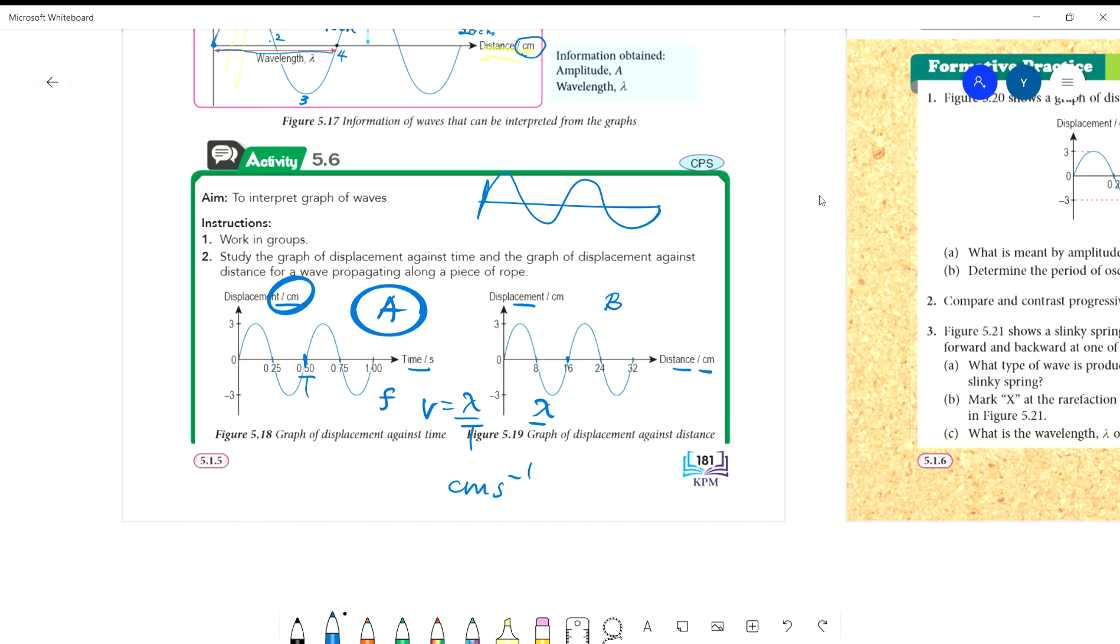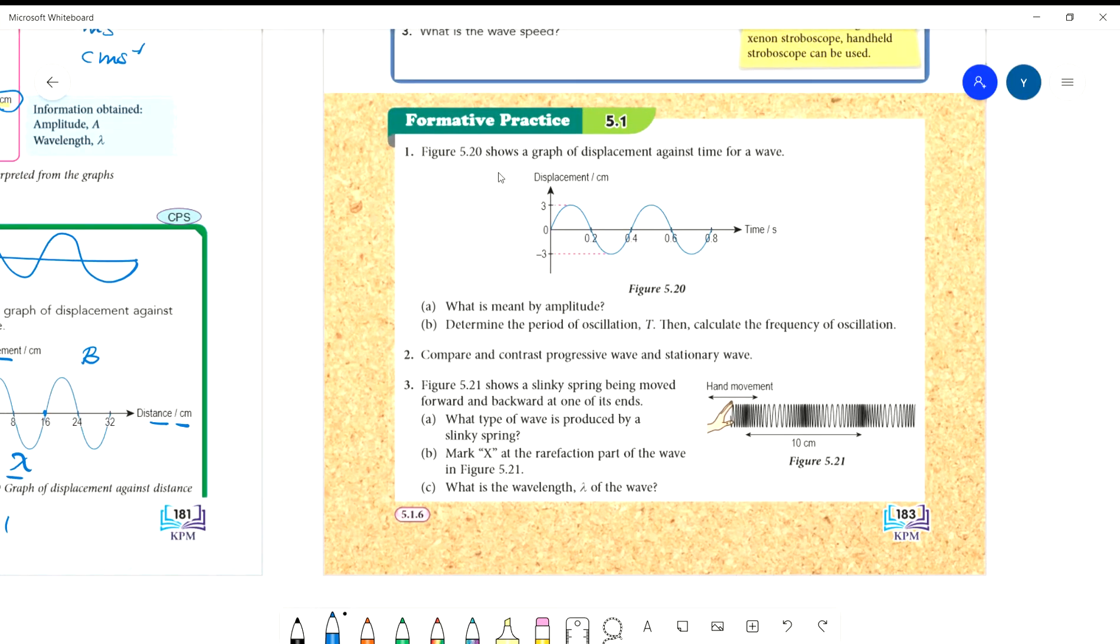Now let's go to the questions. Formative Practice 5.1. Question 1 shows a graph of displacement against time for a wave. What is meant by amplitude? It's not asking how much, but what is the meaning of amplitude. Amplitude is maximum displacement - maximum displacement of the vibrating particle. If we want to be more complete, it's the particle that vibrates or oscillates to its maximum extent. Determine the period of oscillation, then calculate the frequency. This is displacement against time, so the period, one complete cycle, is 0.4 seconds. From the period, you get the frequency. The unit is Hz, written H-E-R-T-Z.